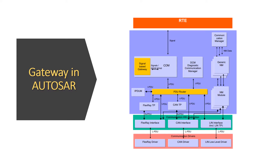This image is taken from the AUTOSAR document. As we can see here, the signal-based gateway is highlighted in the COM module, which means that all gatewaying with respect to signals is taken care of at the COM level.